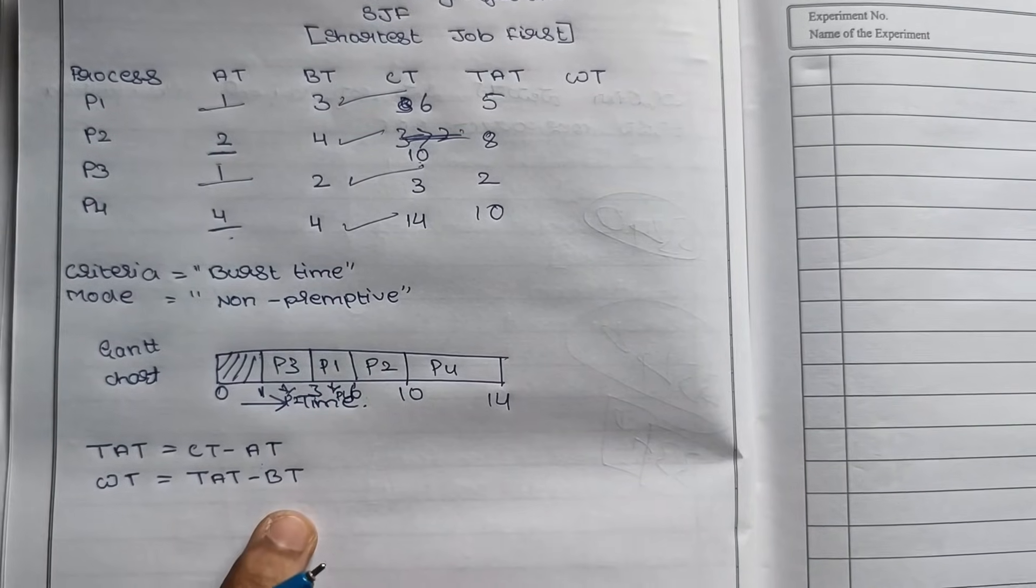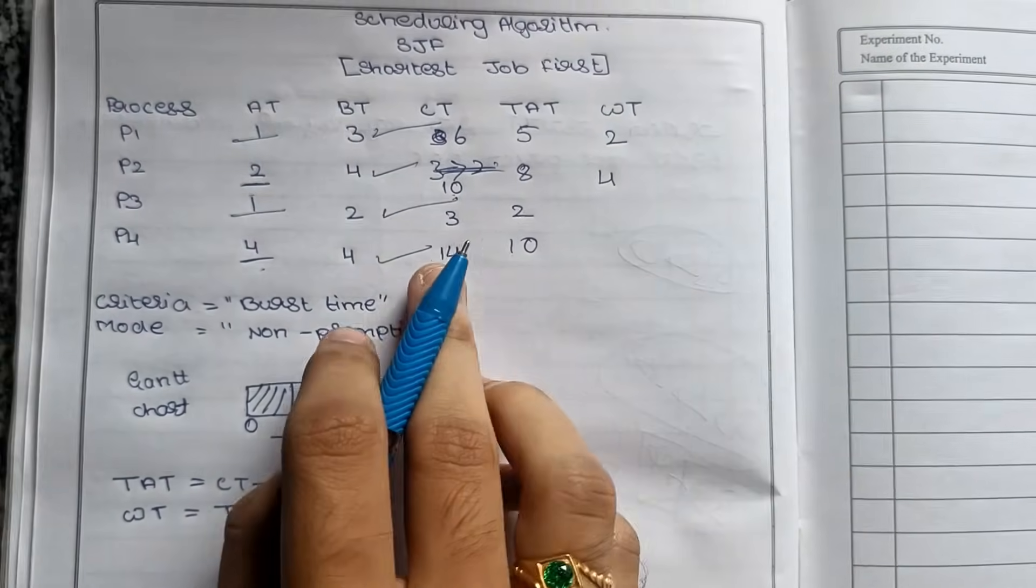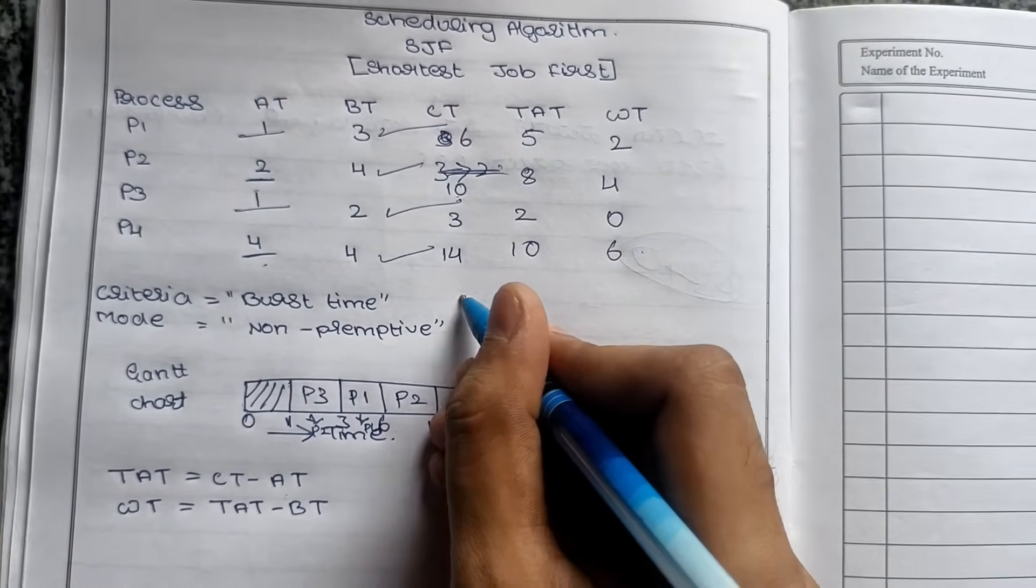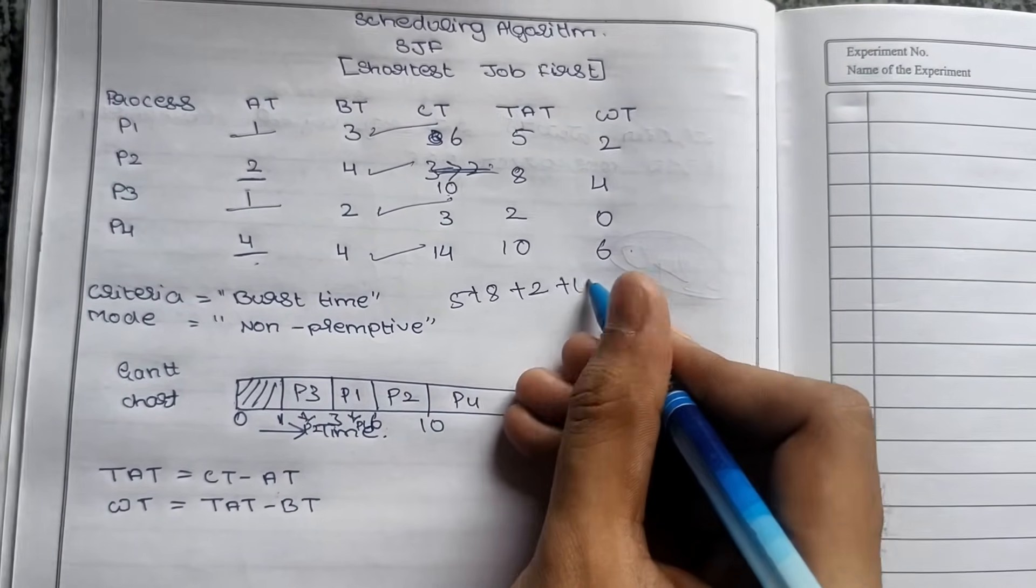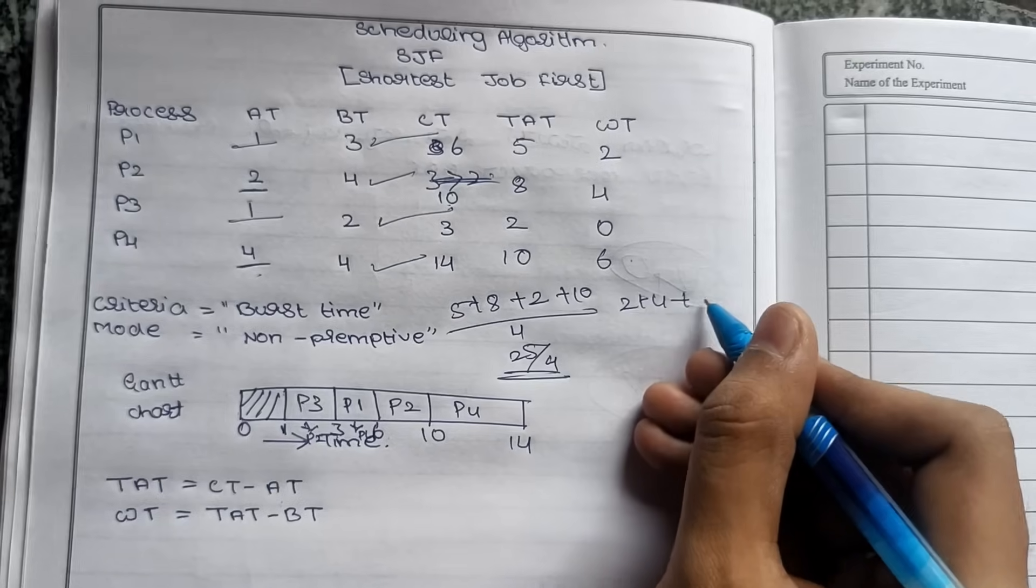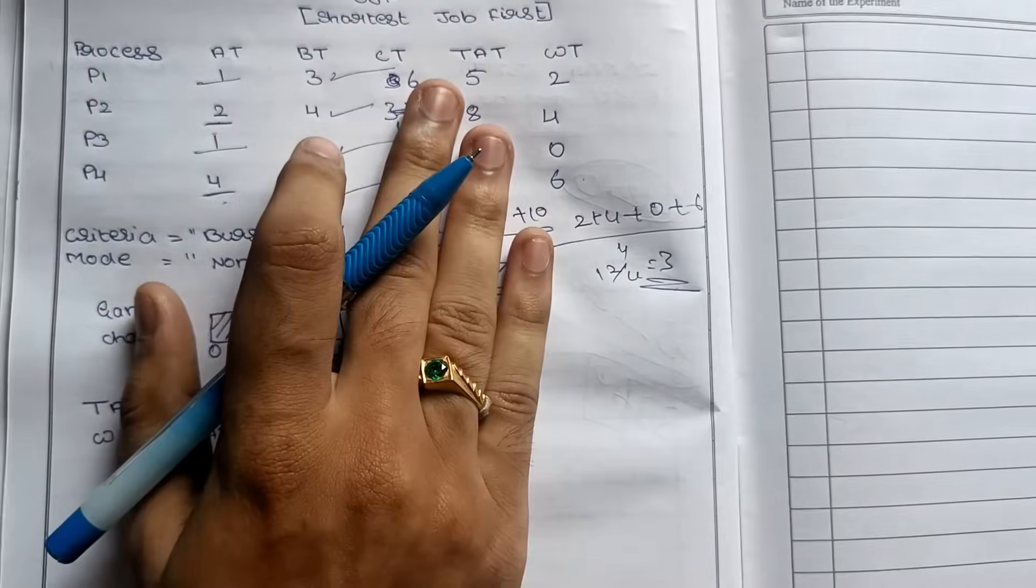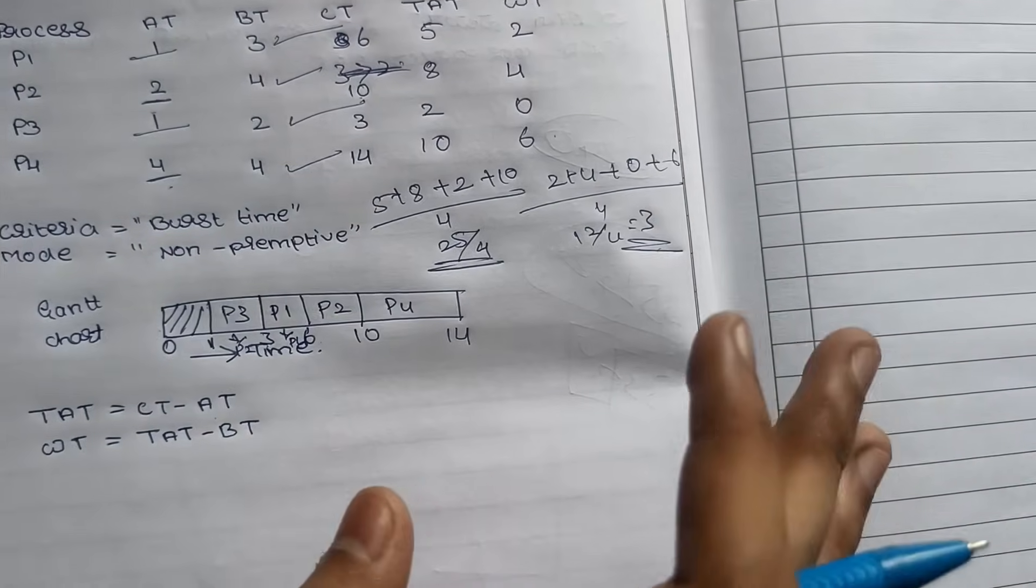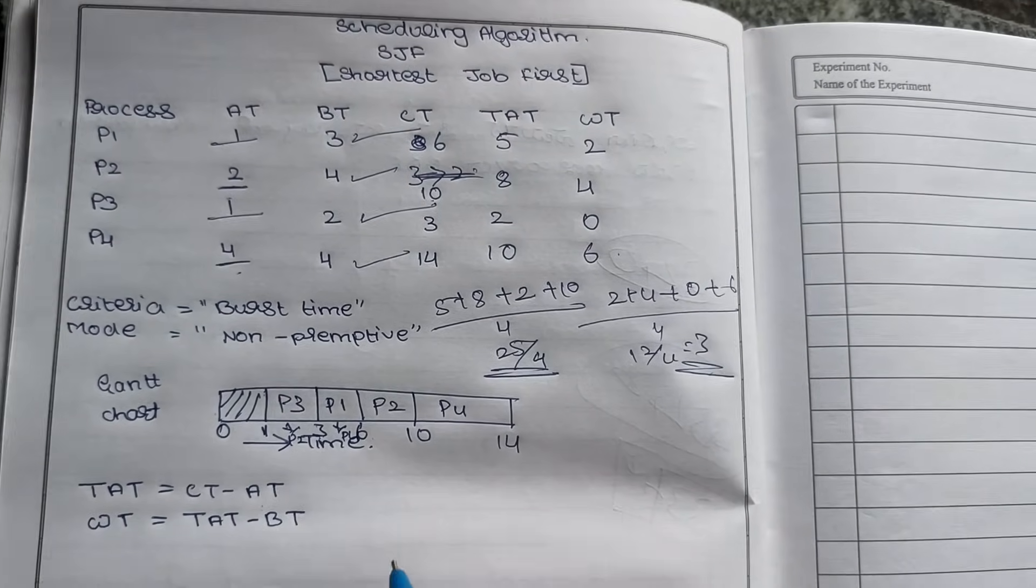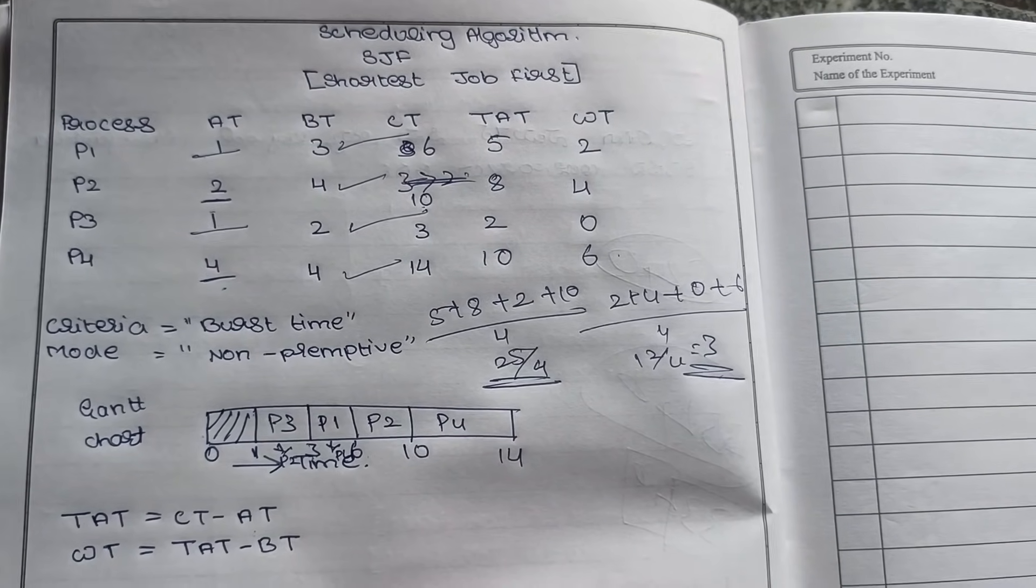Waiting time we calculate as TAT minus BT. 5 minus 1 is 4, 8 minus 4 is 4, 2 minus 2 is 0, and 10 minus 4 is 6. Average of turnaround time: 5 plus 8 plus 2 plus 10 equals 25 by 4. Waiting time: 4 plus 4 plus 0 plus 6 equals 12 by 4, which is 3. This is the overall SJF method. If you understand, please like, subscribe, and support. Thank you very much.